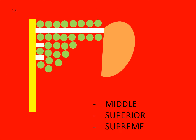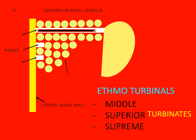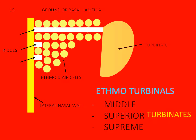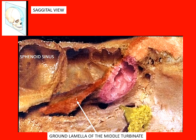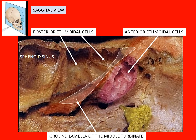The middle, superior, and supreme turbinates, also called the ethmo-turbinals, originate from ridges in the lateral nasal wall of the fetus and extend medially as bony lamellae or ground lamellae. They traverse the ethmoidal air cells, and their free ends in the nasal cavity are the turbinates. The ground lamella of the middle turbinate is a well-formed constant structure and it divides the ethmoid air cells into an anterior and a posterior group of cells.